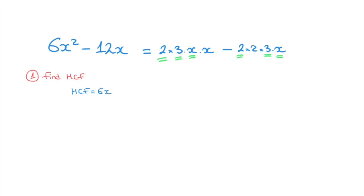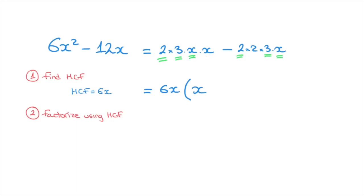Now that we have the highest common factor, we move on to step 2 — factorize using HCF. This equals the highest common factor 6x, times in parentheses all the factors we didn't underline in the first term, which is just x. We then note the operation between the two terms: the second term is being subtracted, so we add a minus sign inside the parentheses. Finally, the only factor not underlined in the second term is 2, so I write that inside the parentheses and close them.